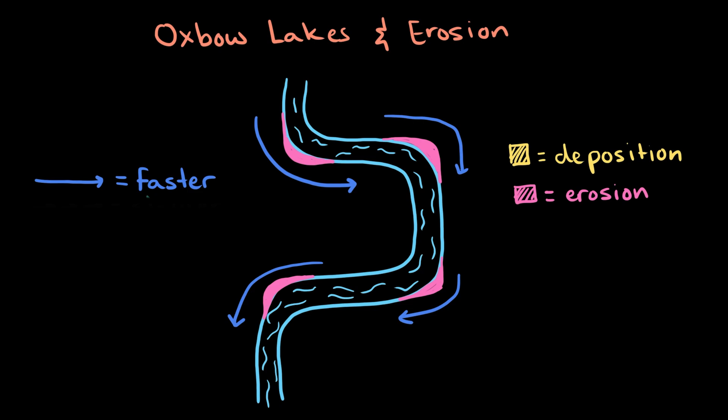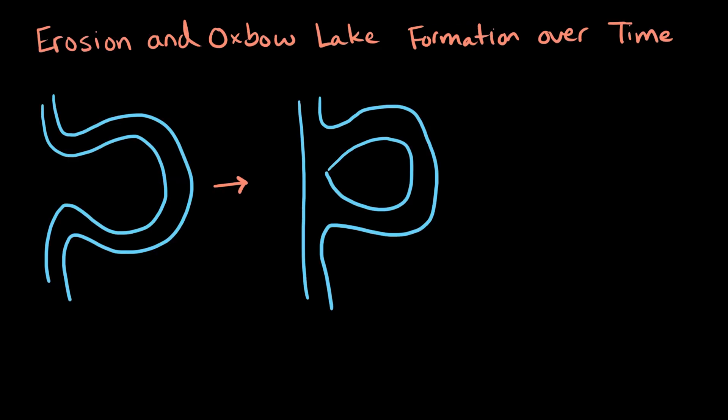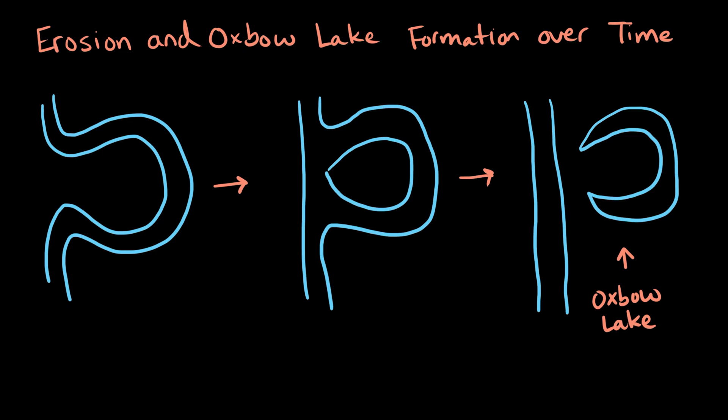Conversely, the current of the water is slowest on the inside of a bend. Here, the water slows down so much that some of the sediment that is being carried is dropped or deposited. This is called sedimentation. Over time, through erosion and deposition, an oxbow lake will form, which is eventually cut off from the river.